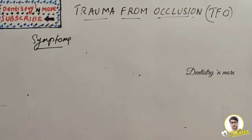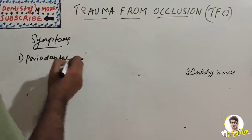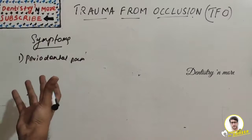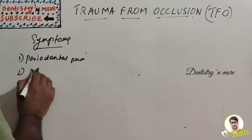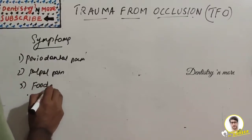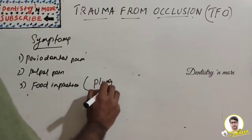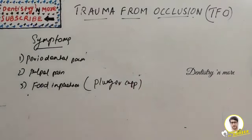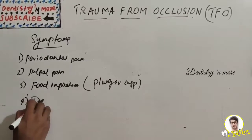Symptoms of TFO include periodontal pain — in severe trauma there is localized sharp pain or soreness to the tooth; in chronic nature the pain is mild. There can also be pulpal pain, seen as sensitivity to cold. Food impaction can occur through the plunger cusp effect, where occlusal interference creates a functional opening of contact between teeth leading to food impaction. TMJ pain may also be present.